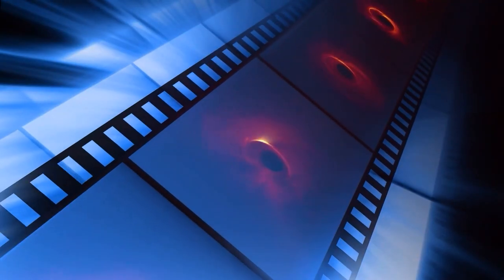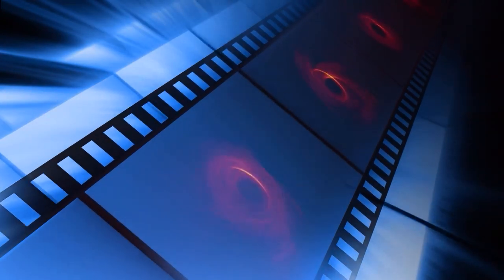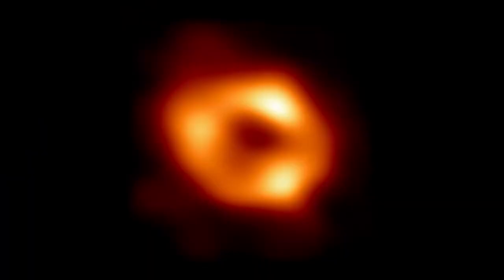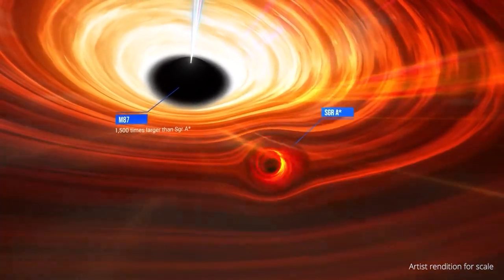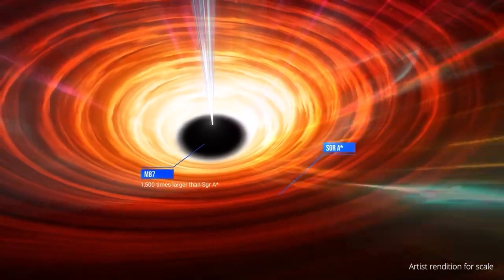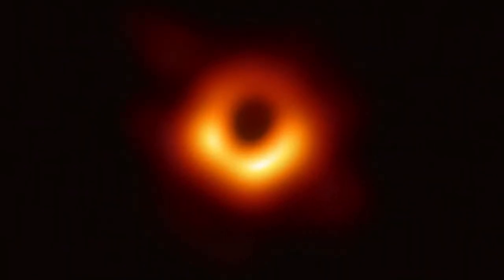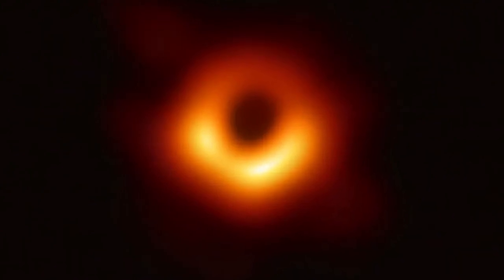The Event Horizon Telescope recently released a stunning submillimeter image of itself illuminated by its glowing surroundings. Many galaxies have nuclear supermassive black holes that are a thousand times larger, such as M87's nucleus, which was photographed by the Event Horizon Telescope in 2020.